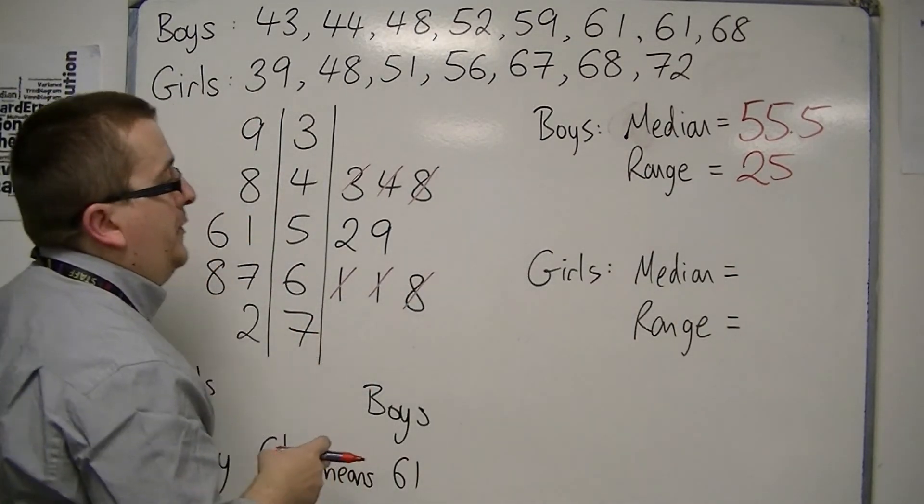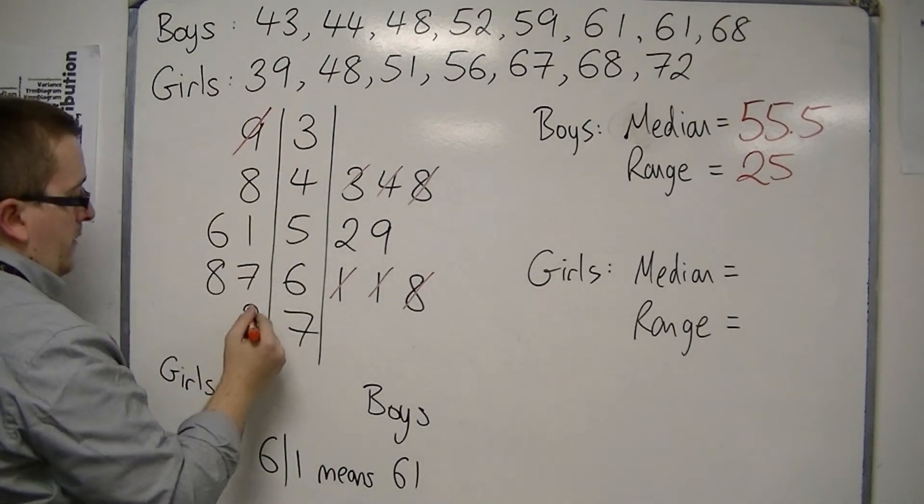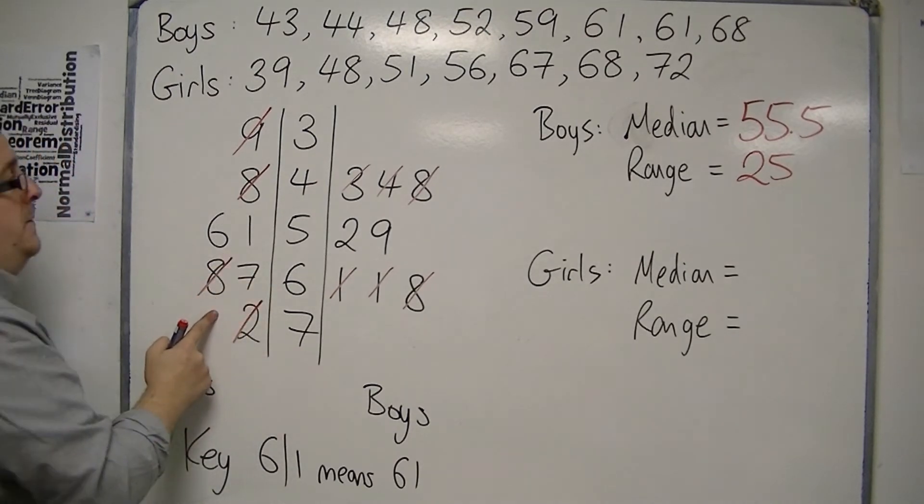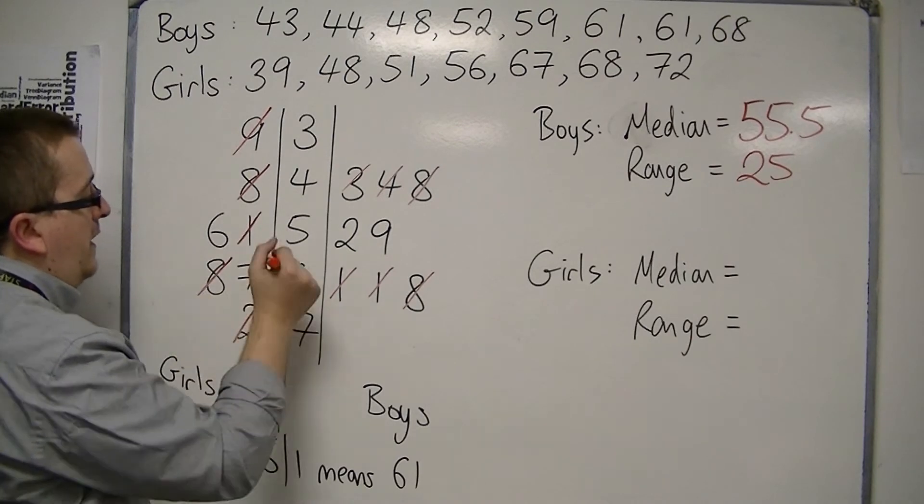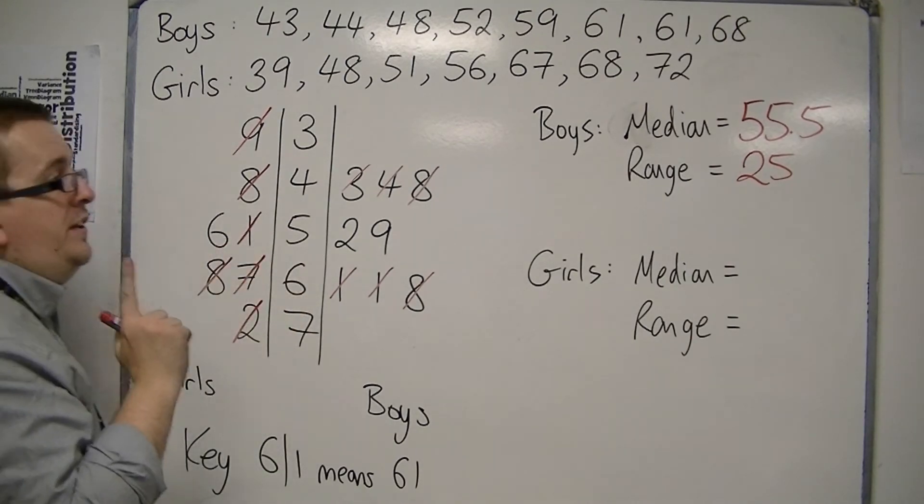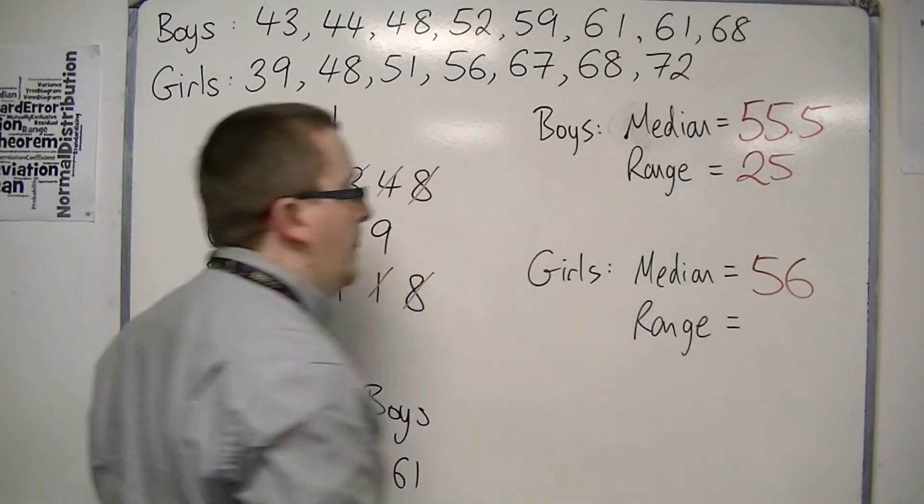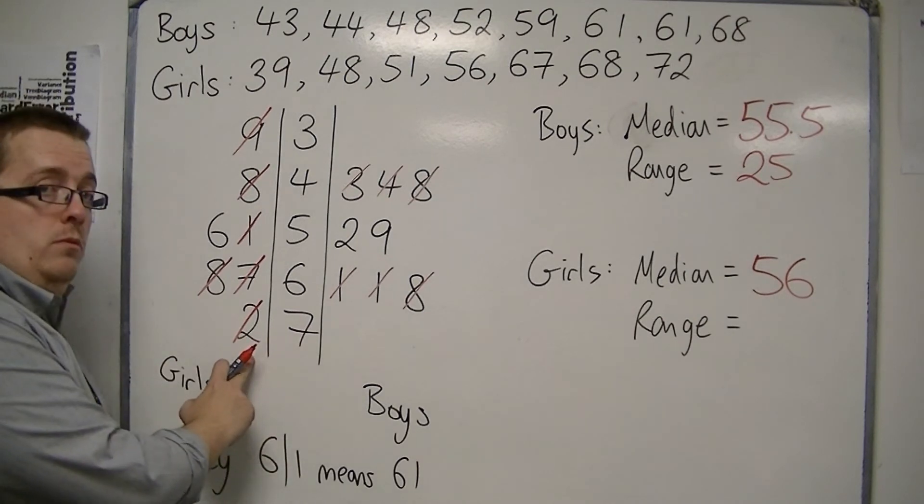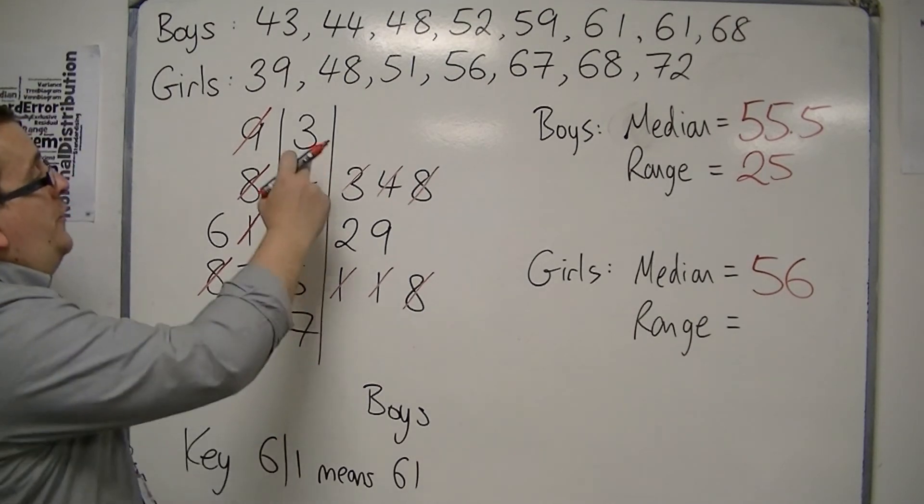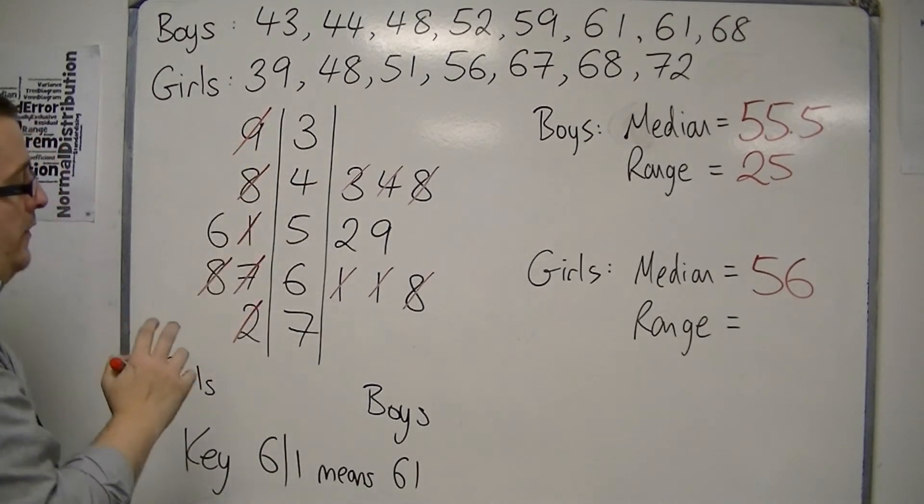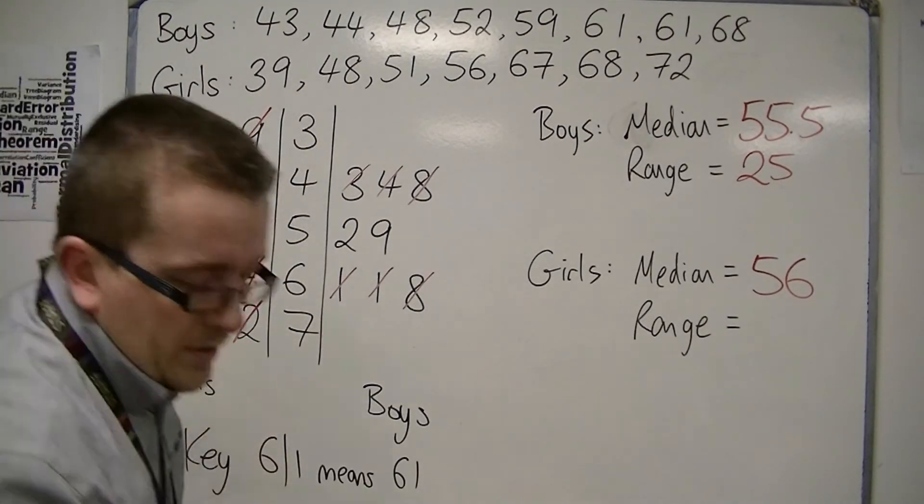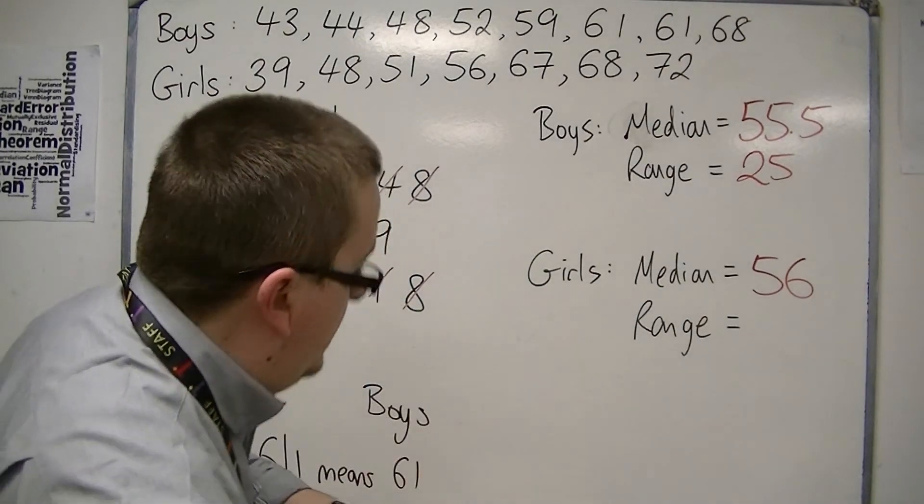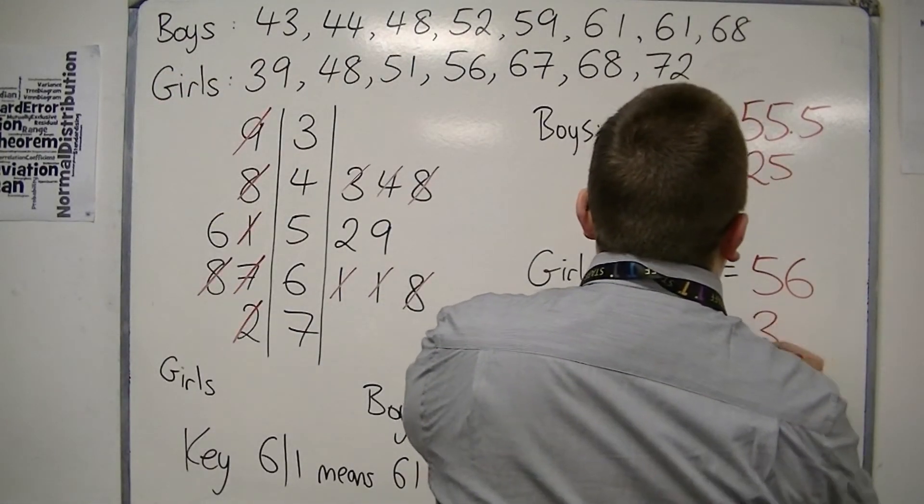Now for the girls. The median, the smallest, largest, smallest, largest, okay, so careful with this. Then the smallest is 51, then the largest is 67, leaving me with 56. And then the range is 72, not 27, 72, take away 39. So that would be, trying to do that in my head, but with all the numbers back to front, it's not too easy. So 72 take away 39 is 33. So we get 33 for the range.